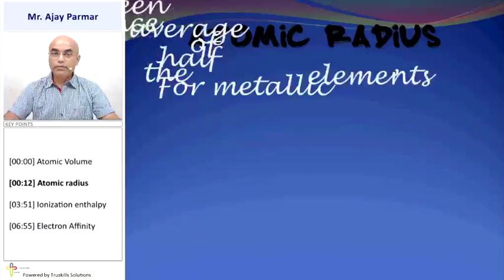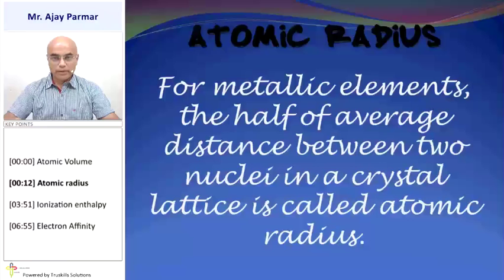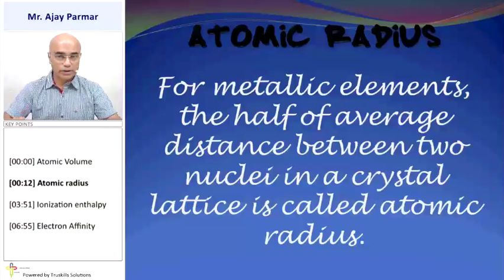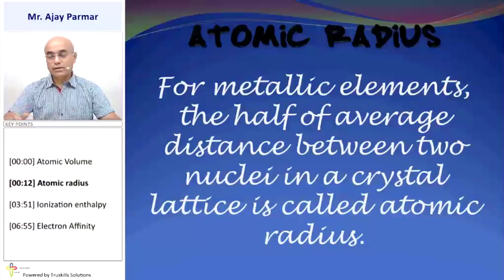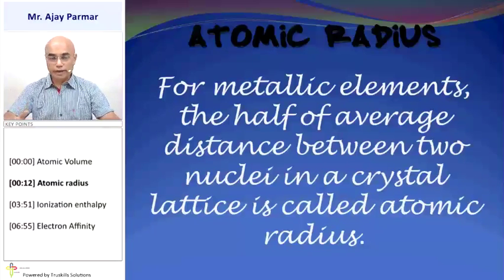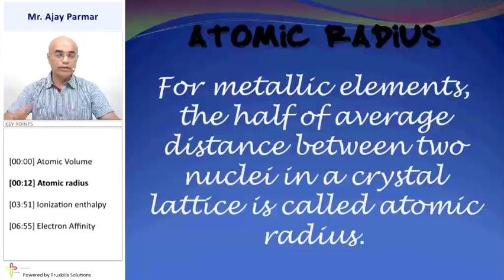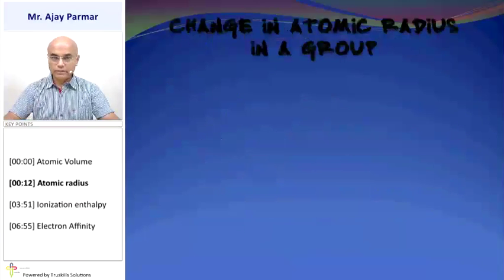If it is a metallic element, then half of the average distance between the two nuclei in the crystal lattice of that particular metallic element — in that structure — will be referred to as atomic radius.